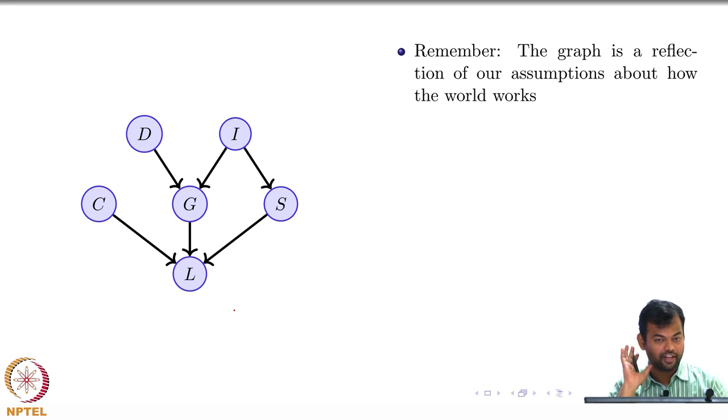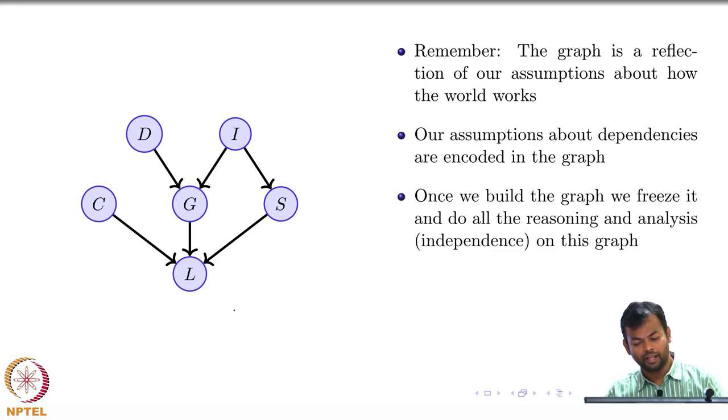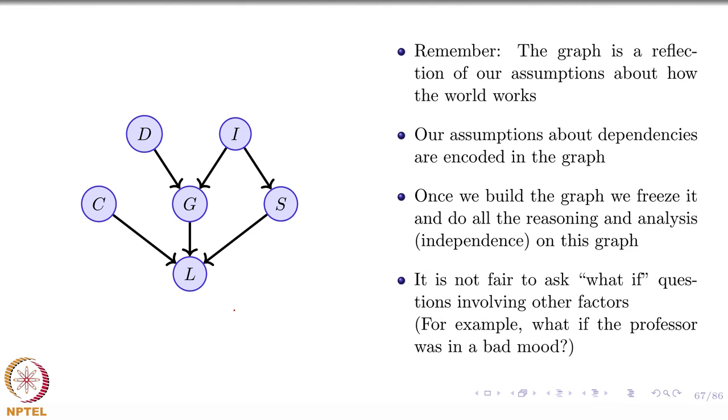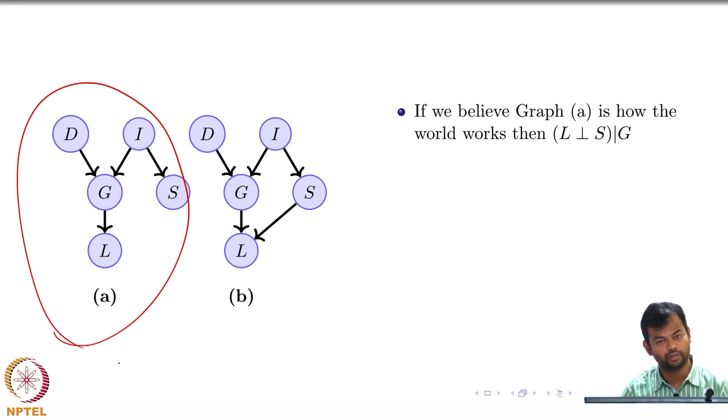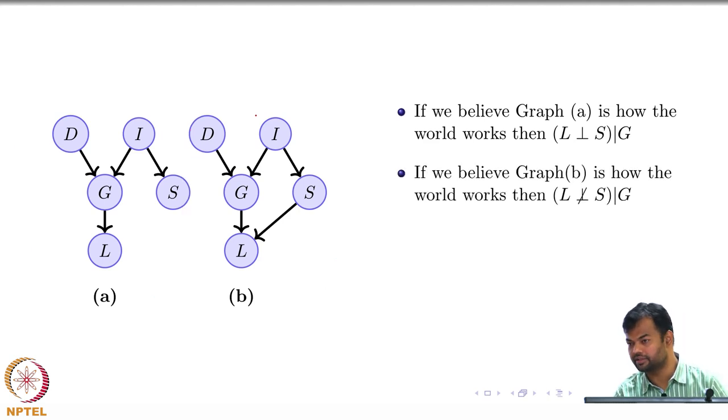You have to make some kind of assumptions, live with those assumptions, and do all the analysis within that set of assumptions. The graph is just a reflection of what you decided about how the world works. Once you have done that, you are going to freeze it and not make any changes and not ask these what-if questions. If you believe that A is how the model works, then L is independent of S given G. If you believe that B is how the world works, then L is not independent of S given G.